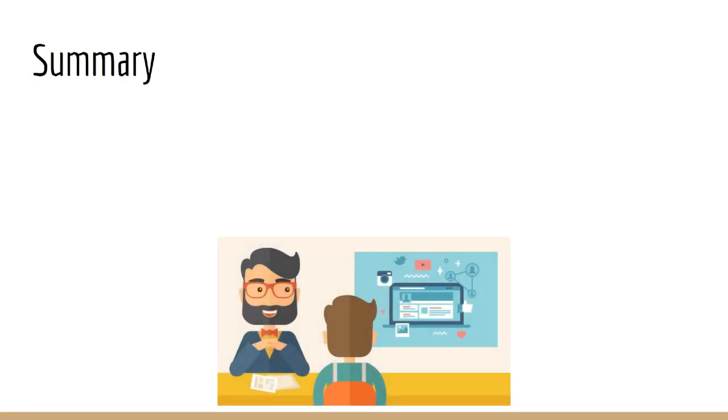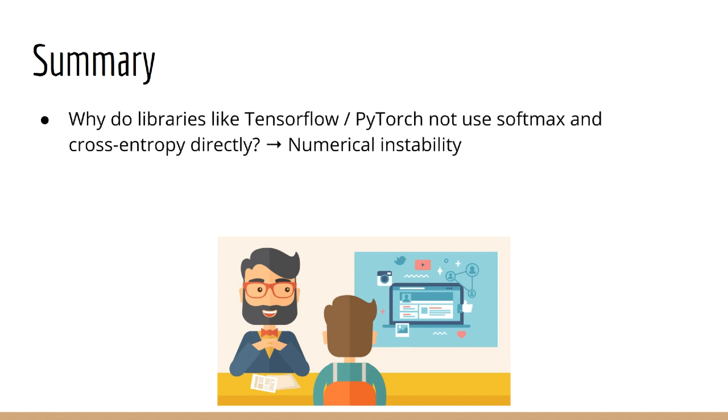To summarize this lecture, here's what we did. First, we began by asking the question: why do libraries like TensorFlow and PyTorch not use the softmax function and the cross entropy directly, but instead have special functions that combine them by taking in the logits or the log probabilities? The answer was that performing the softmax and cross entropy as defined leads to numerical instability. In order to eliminate this problem, we first looked at a numerically stable way to calculate the softmax. The trick involves subtracting a constant term from the activation before applying the softmax function.